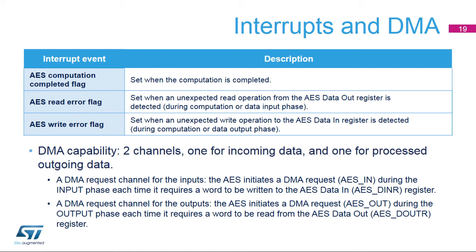Direct memory access requests are generated internally for both incoming and outgoing data. The DMA channel must be configured in memory-to-peripheral or peripheral-to-memory mode, with a data size equal to 32 bits.